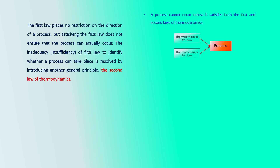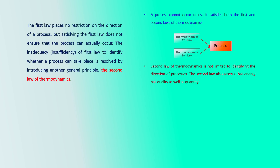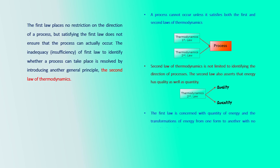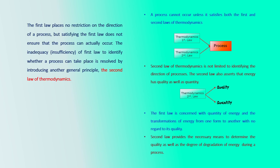The second law of thermodynamics is not limited to identifying the direction of processes. It also asserts that energy has quality as well as quantity. The first law is concerned with the quantity of energy and the transformation of energy from one form to another, with no regard for its quality. The second law provides the necessary means to determine the quality as well as the degree of degradation of energy during a process.